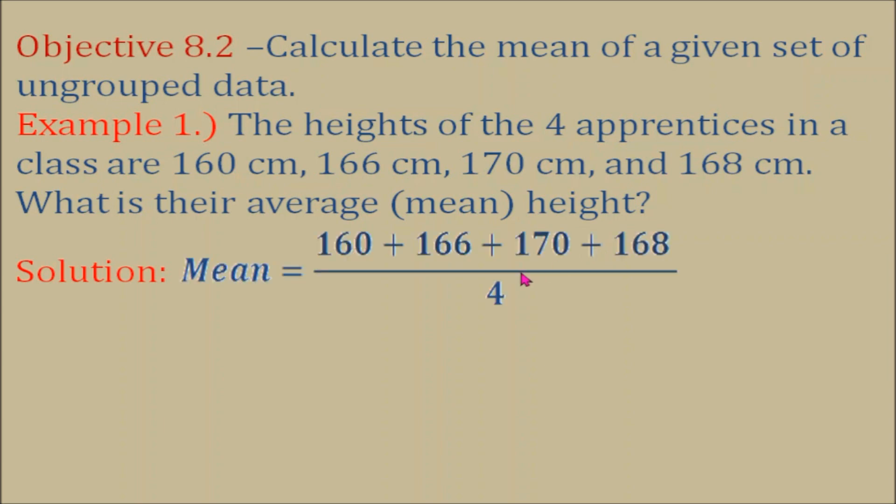To find the mean, we are going to add all these four heights up and divide by four. Divide by four because there are four data points. So, 160 plus 166 plus 170 plus 168 equals 664 divided by four. 664 divided by four is 166. The mean height is 166 cm.